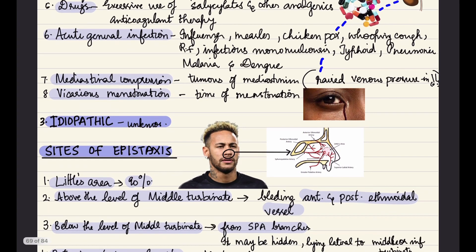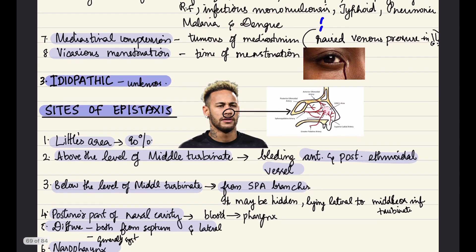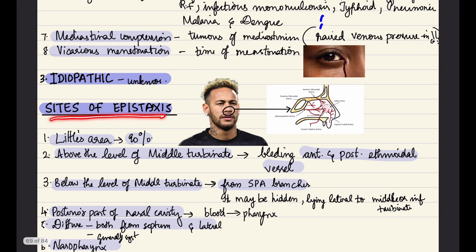Then comes idiopathic causes. Now we study the sites of epistaxis. Most commonly epistaxis is found in Little area, about 90%, which is formed by Kiesselbach's plexus.